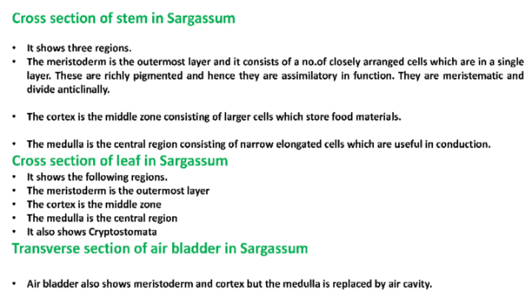These cells are richly pigmented and hence they are assimilatory in function. They are meristematic and divide anticlinally. The cortex is a middle zone consisting of larger cells which store food materials. The medulla is a central region consisting of narrow elongated cells which are useful in conduction.